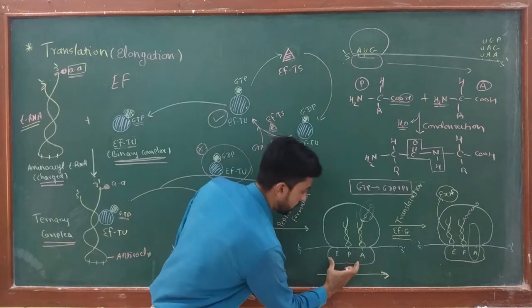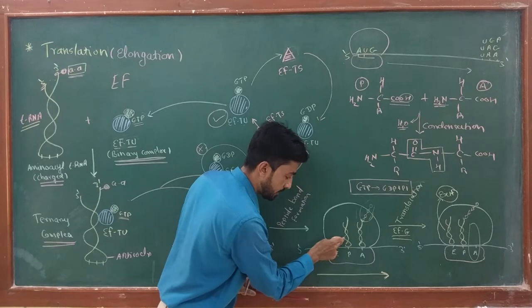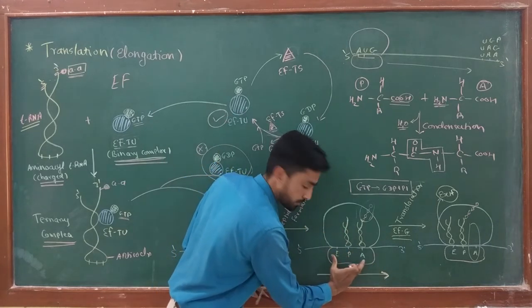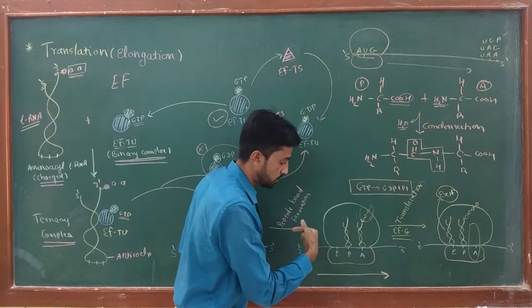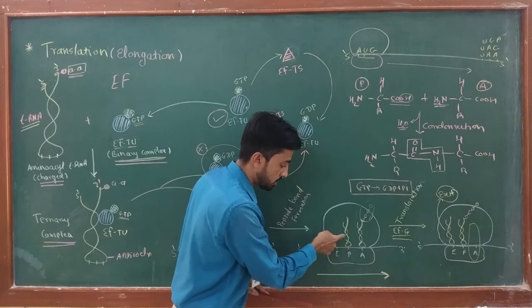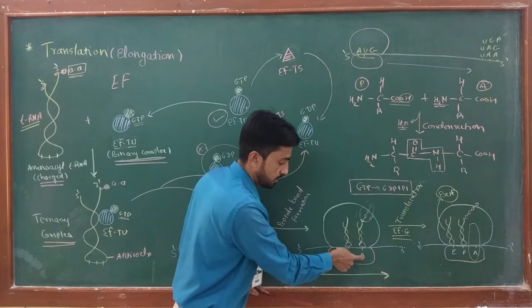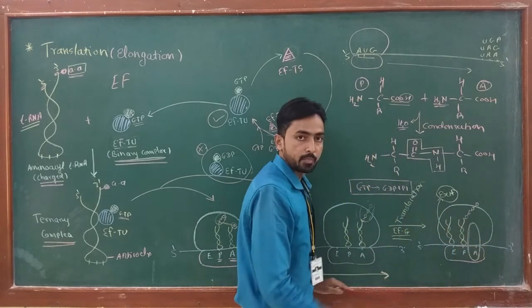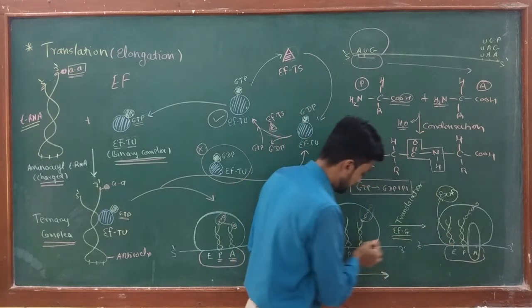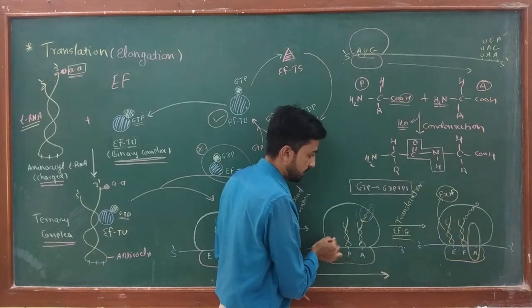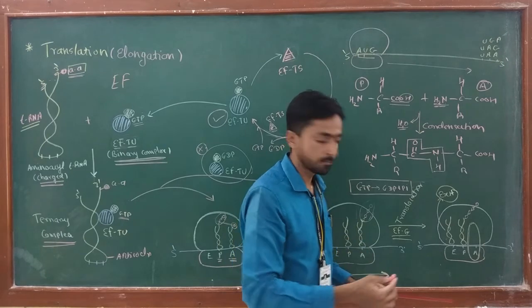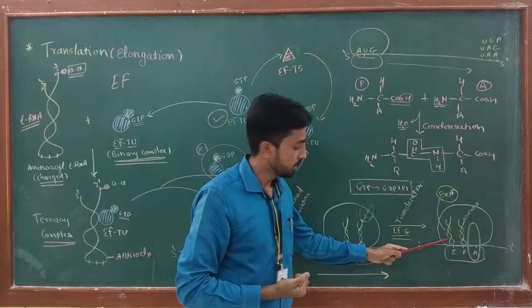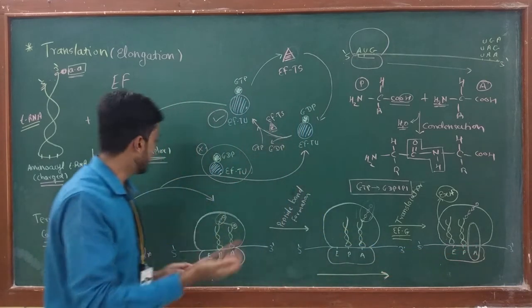Due to movement of the ribosome one codon ahead, the tRNA from the P site now moves to the E site, while the tRNA from the A site enters the P site, and the A site becomes free. Look carefully: due to the forward movement of the ribosome, the positions of the sites change. The uncharged tRNA from the P site comes to the E site, the tRNA from the A site enters the P site, and the A site is now free for accepting the next tRNA. The E site is the exit site — from the exit site, this tRNA can fall off the ribosome.